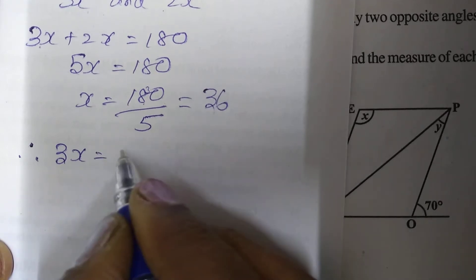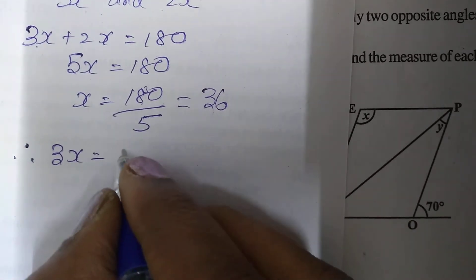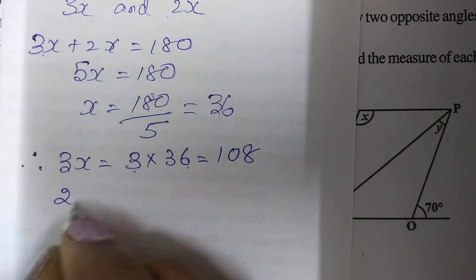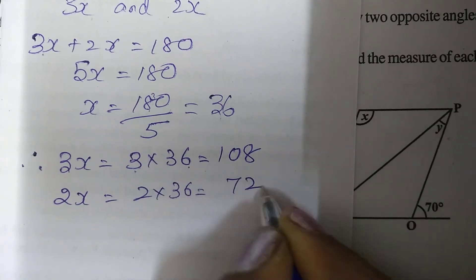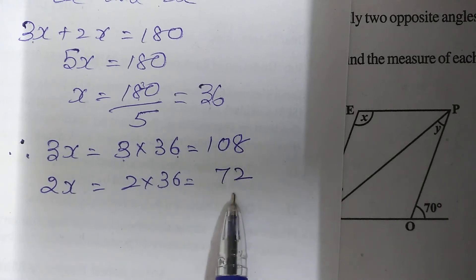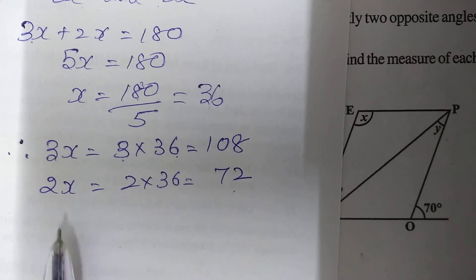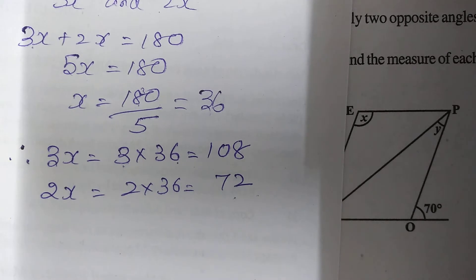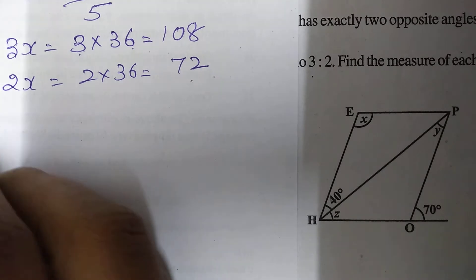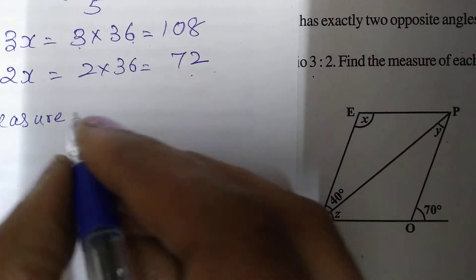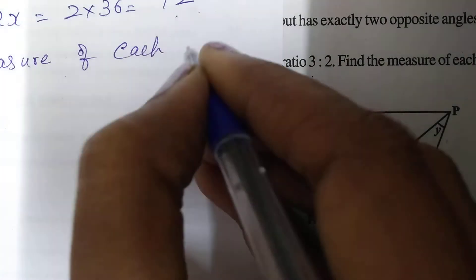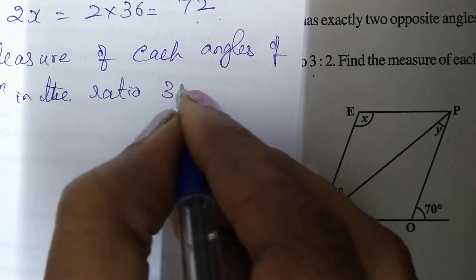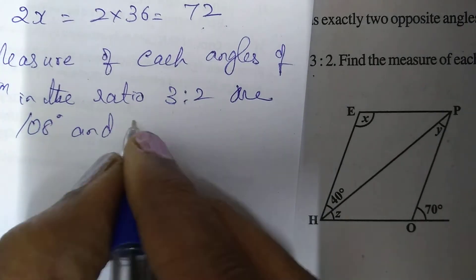Therefore, 3x equals 3 × 36 equals 108 degrees, and 2x equals 2 × 36 equals 72 degrees. To verify: 108 plus 72 equals 180 degrees. So the measure of each angle of the parallelogram in the ratio 3:2 are 108 degrees and 72 degrees.